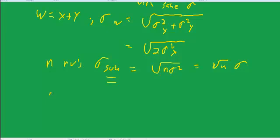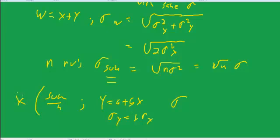Now we do the sum divided by n. We can use our formula: if y equals a plus bx, then sigma y equals b sigma x. Here, b is 1 over n. We're multiplying by 1 over n. So the sigma of x-bar, which is the sum over n...